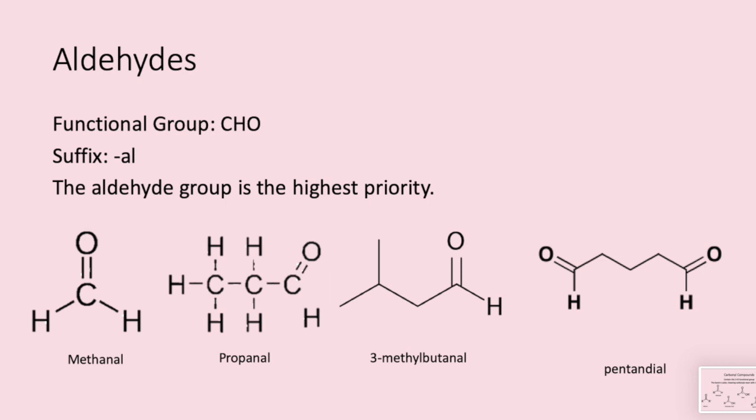First off, aldehydes. They have the functional group CHO, which means the C double bond O is at the end of a carbon chain. They have the suffix '-al', so we have methanal, propanal, butanal, ethanal. The aldehyde group has the highest priority — we call the carbon with the aldehyde group carbon one, and use this for reference when naming.